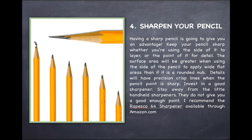Number four, make sure you have a sharp pencil. Having a sharp pencil is going to give you an advantage. Keep your pencil sharp whether you're using the side of it to layer or the point of it for the details. The surface area will be greater when you're using the side of the pencil to apply wide flat areas than if you used a rounded nub. Details will have precision crisp lines when the pencil point is sharp.